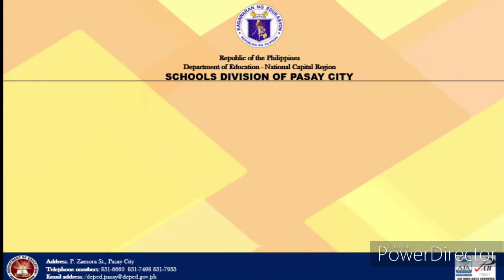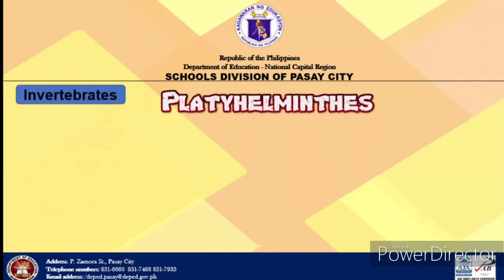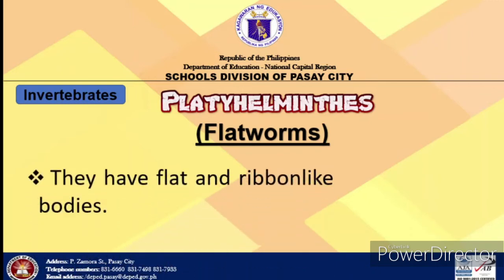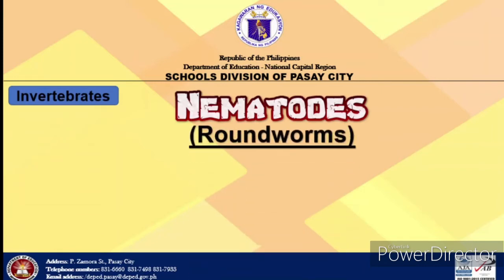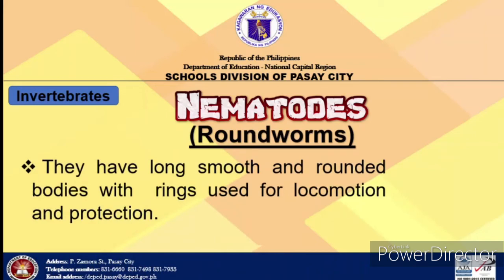Next are worms. Worms are classified based on their structure. The first one is platyhelminthes, or commonly known as flatworms. They have flat and ribbon-like bodies. They do not have body cavities that contain developed circulatory or respiratory organs. They feed by sucking out juices from the body of their prey. Their digestive cavity has only one opening for taking in food and excreting waste. Example is planaria. Next, the nematodes — they are called roundworms. They have long, smooth, and rounded bodies with rings used for locomotion and protection. Roundworms take in food through the mouth and excrete waste materials through the anus. The passage of food through the digestive system is propagated by the worm's wave-like movement. Example is Ascaris.